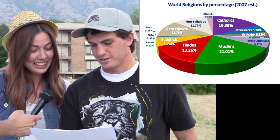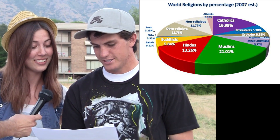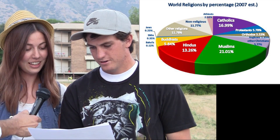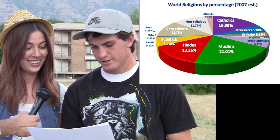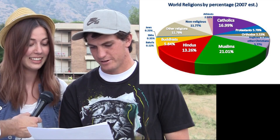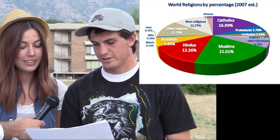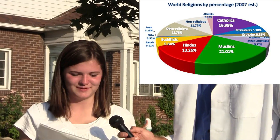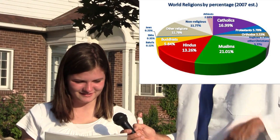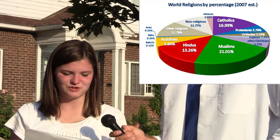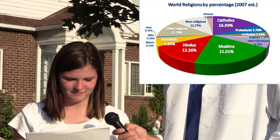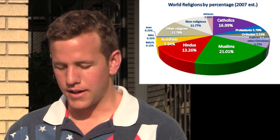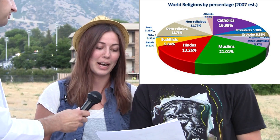Catholics coming in at sixteen percent in second place, with Hindus coming in at third at thirteen percent, other religions at fourth, and non-religious coming in at fifth. There's a lot of non-religious people, more than I thought. Comparatively, Catholics are pretty big too. I didn't know Jews were so little. And what type of graph is that? I believe it's a pie graph. Pie chart.